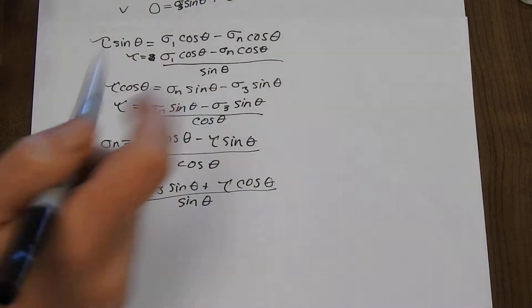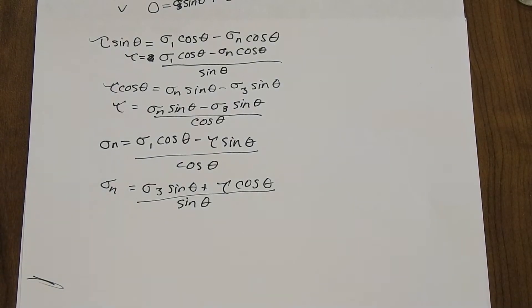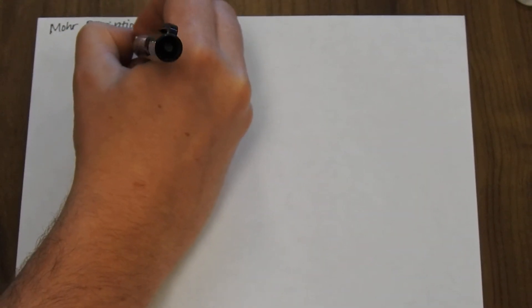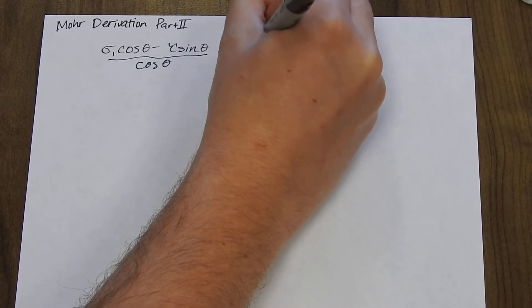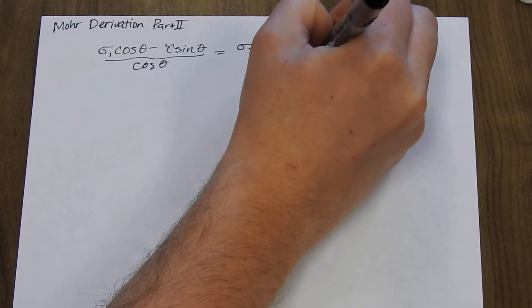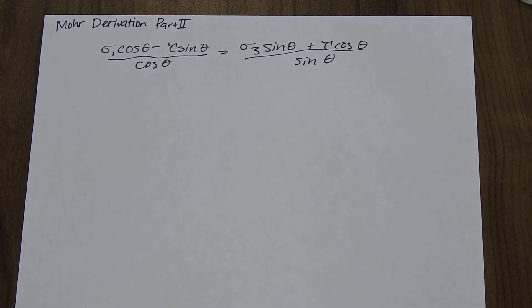This is a continuation of the Mohr circle derivation video. In the last video we had a plane P and came up with four terms: two expressions for tau (shear stress) and two expressions for normal stress. Now we're going to set those terms equal to each other. Starting with the normal stresses, we set sigma_1 cosine(θ) minus shear stress sine(θ) over cosine(θ) equal to sigma_3 sine(θ) plus tau cosine(θ) over sine(θ).